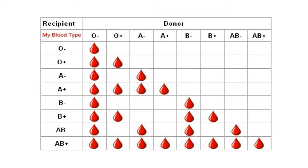O negative blood group is called the universal donor blood group because a person having O negative blood group can donate to anyone irrespective of the blood group that person has. We have created a chart for you, and it is quite clear in this chart that a person having O negative blood group can donate to any blood group. O positive can donate to O positive, A positive, B positive, and AB positive. Now let us move to your next question.